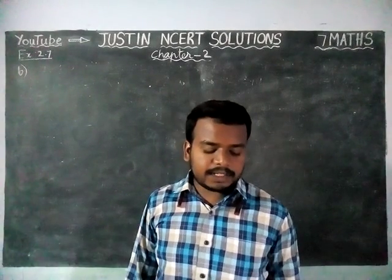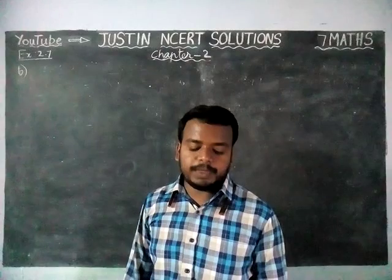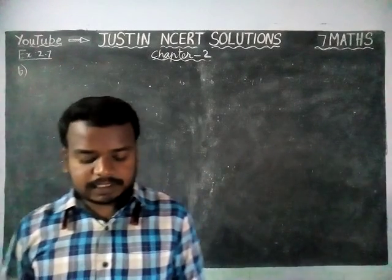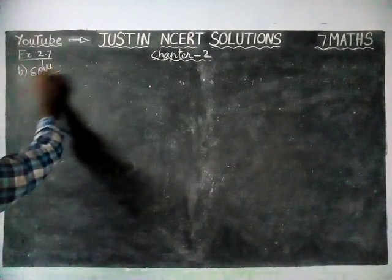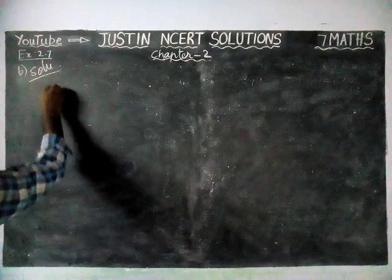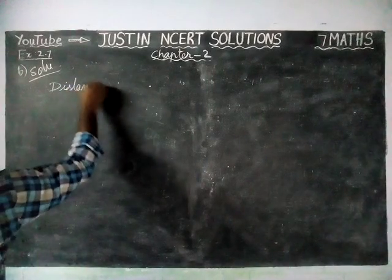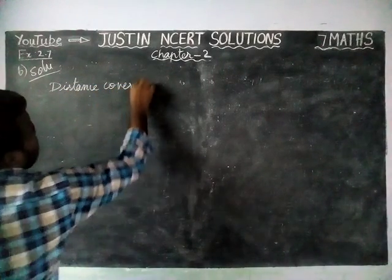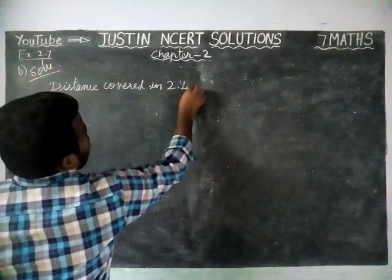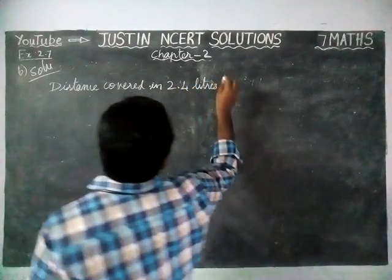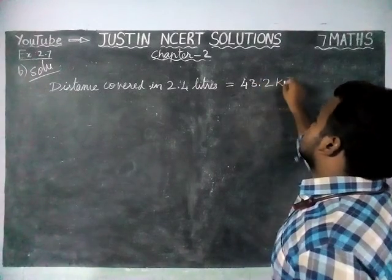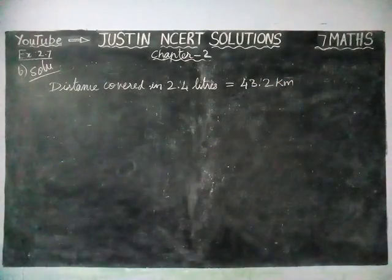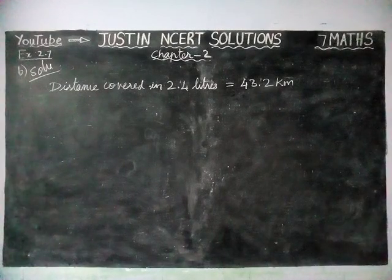Here, a vehicle covers a distance of 43.2 km in 2.4 litres of petrol. How much distance will it cover in 1 litre of petrol? Now, the given information: distance covered in 2.4 litres of petrol is equal to 43.2 km. They ask us to find how much km is covered in 1 litre.